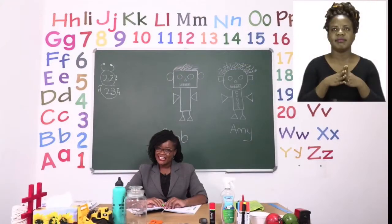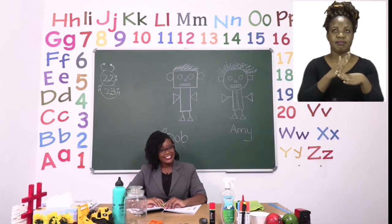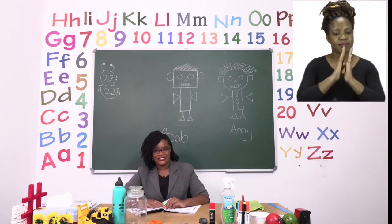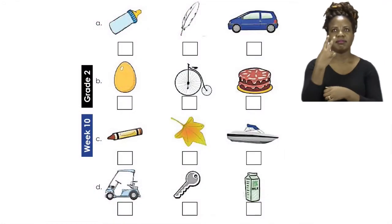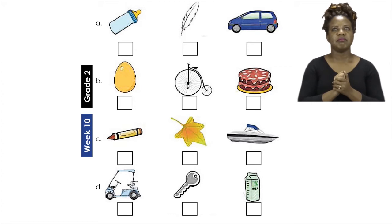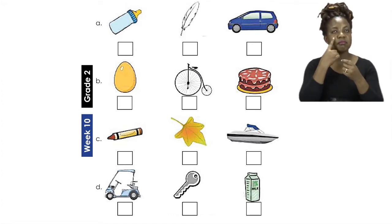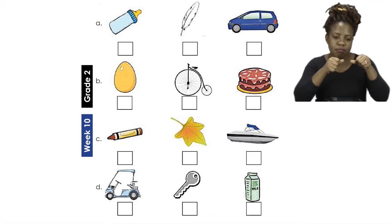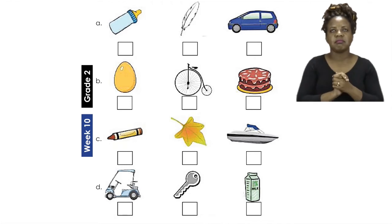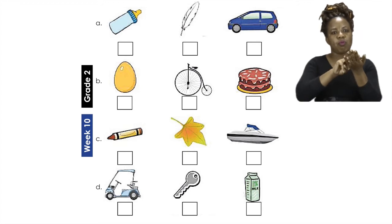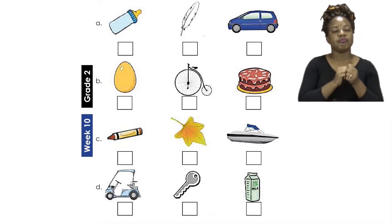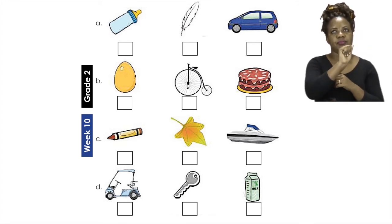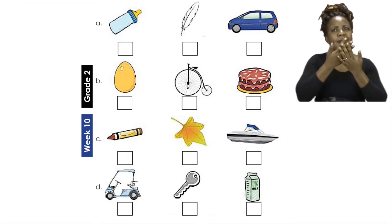For our first exercise, boys and girls, let's turn to page 22. On page 22 we are going to be putting all the items we can see in order. We are going to be using measurement, and the measurement we're going to be using is weight — how much each thing weighs. We're going to start with A and should start from the heaviest item to the lightest item.